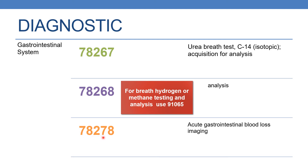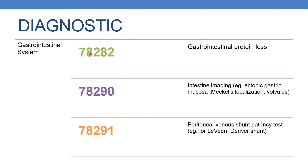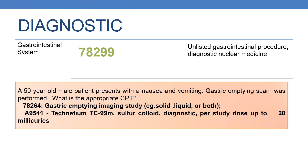The next code is 78278, which deals with acute gastrointestinal blood loss imaging. The next code is 78282, which deals with gastrointestinal protein loss. The next is 78290, which deals with intestinal imaging — for example, ectopic gastric mucosa, Meckel's localization, and volvulus. The next code is 78291, which deals with peritoneal venous shunt patency test — for example, LeVeen or Denver shunt. And finally, 78299 is the unlisted gastrointestinal procedure, diagnostic nuclear medicine.